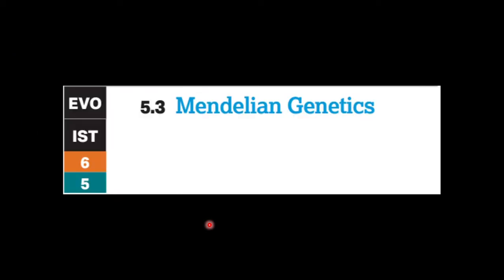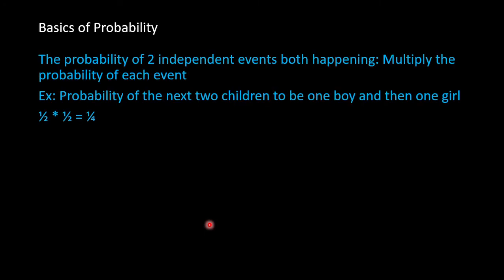Now we go to Mendelian genetics. Gregor Mendel created multiple laws that explain heredity and the passing of traits, but first we must look at the basics of probability. When finding the probability of two independent events both happening, you multiply the probabilities of both events. For example, the probability of the next two children being one boy and then one girl would be one half times one half, which equals one fourth. The keyword is 'and,' which signals multiplication.